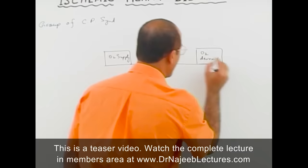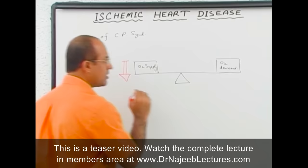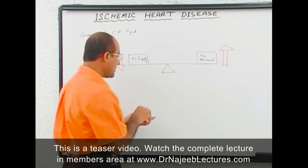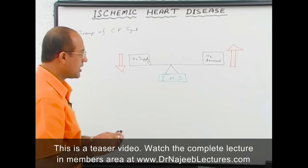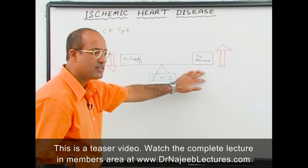This balance should be maintained. Whenever oxygen supply is reduced and/or oxygen demand is increased, the myocardium develops relative ischemia, and we say there is ischemic heart disease. It is a group of clinical pathological conditions characterized by imbalance between oxygen supply and oxygen demand by the myocardium, in which the result is relative ischemia.